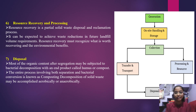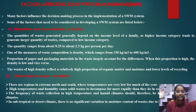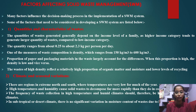The flowchart of the solid waste management system follows these stages: generation, on-site handling and storage, collection and transfer and transport, processing and recovery, and the final stage is disposal. Regarding factors affecting solid waste management, the quantities of waste generated generally depend on the income level of the family, as higher income categories tend to generate larger quantities. The quantity ranges from about 0.25 to 2.3 kg per person per day, and waste density ranges from 150 to 600 kg per cubic meter.